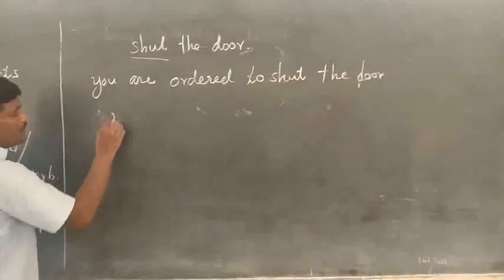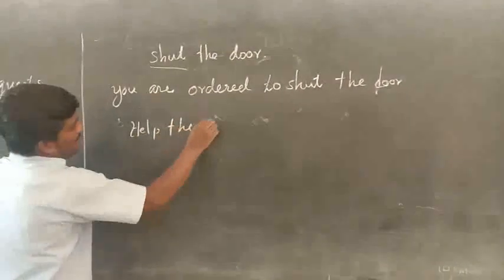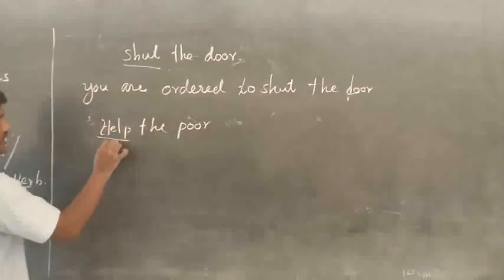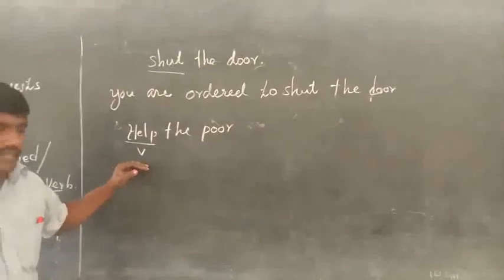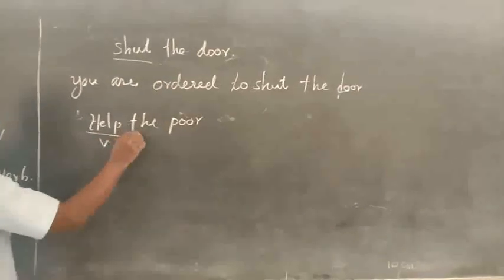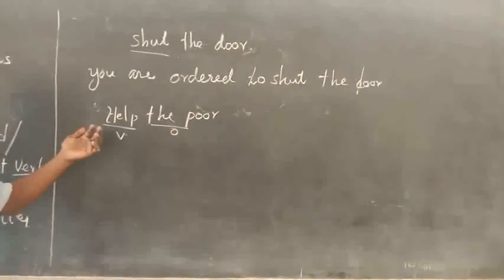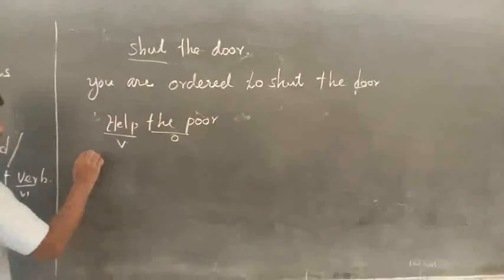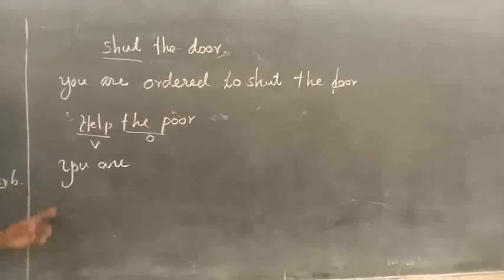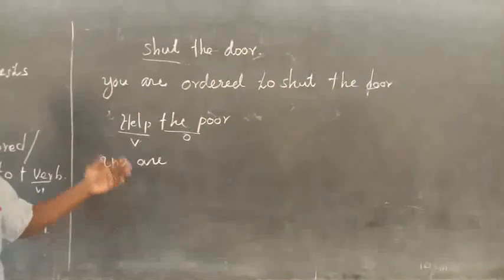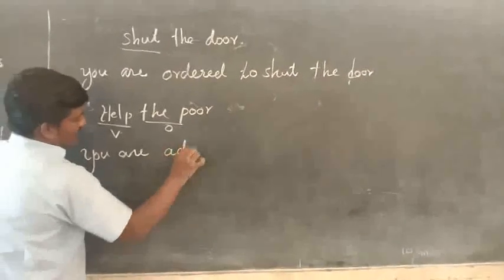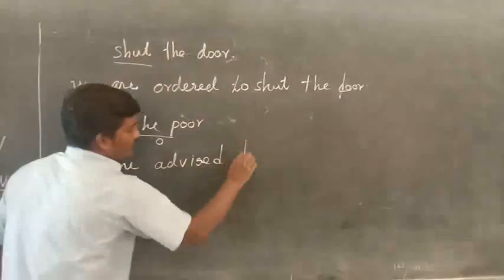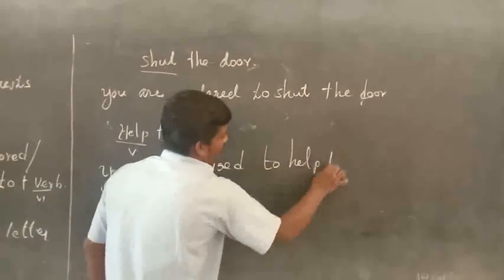Another example: 'Help the poor.' This is definitely an imperative sentence. Here 'the poor' is the object but there is no stated subject. To change it to passive voice, we write: 'You are advised to help the poor.' So: 'You are advised' — then 'to' — then the verb-one form — then the object. 'You are advised to help the poor.'